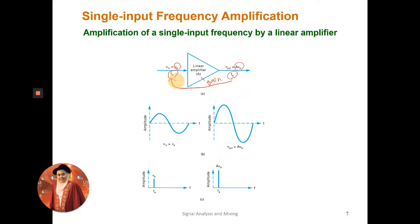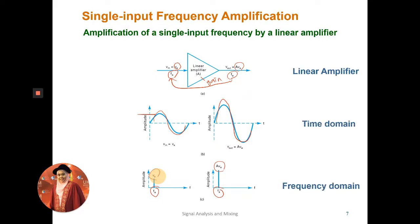When viewed on an oscilloscope and spectrum analyzer, the output signal shape shows a slightly higher amplitude than the input. The frequency spectrum shows the same frequency but with a slightly higher amplitude compared to the input signal.